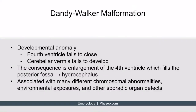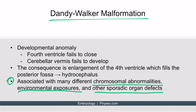Dandy-Walker malformations are associated with many different conditions. While popular resources may cite spina bifida as the main association, Dandy-Walker is actually associated with a whole host of abnormalities — including chromosomal abnormalities, environmental exposures, and other sporadic organ defects including neural tube defects and spina bifida. The point is that the associations are not close enough to commit any single one to memory; just know that if a patient has Dandy-Walker malformation, they are likely to have some other problem as well.